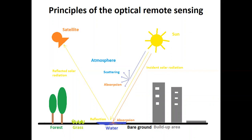The biggest part of solar radiation actually reaches the Earth's surface. Here, some of this sunlight is reflected back into the sky, and another part is absorbed by different surfaces on our planet — by vegetation, by artificial surfaces, by the ground. What is reflected is detected by the sensors of modern satellites.